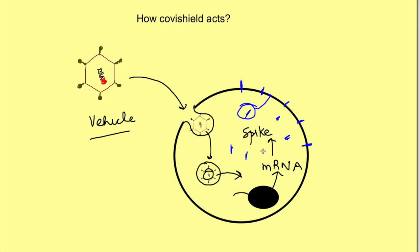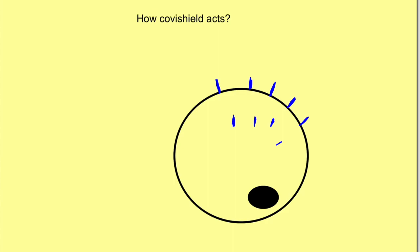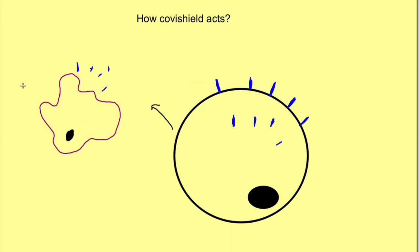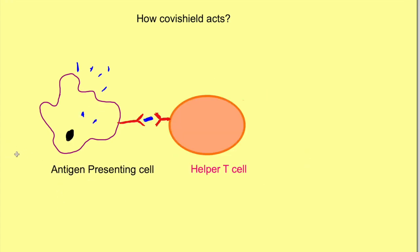Once these spike proteins are expressed on the surface of the cell, two things happen. First, the cells express the protein on the surface. Second, once these cells die, they release these proteins into the environment. These released proteins are then recognized by macrophages, which engulf the fragments of these antigens — the spike proteins. The macrophages then present these small fragments to other cells, which is why they are also known as antigen-presenting cells. They present the antigen to helper T cells.